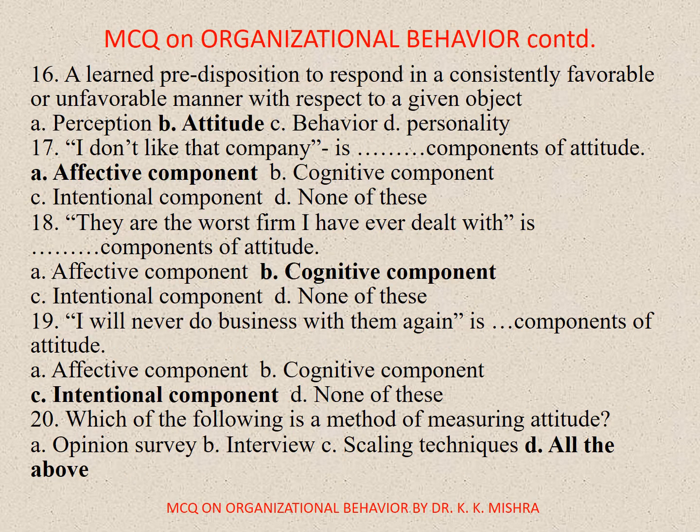Question 16. A learned predisposition to respond in a consistently favorable or unfavorable manner with respect to a given object is: A. Perception, B. Attitude, C. Behaviour, D. Personality. Correct option is B. Attitude.